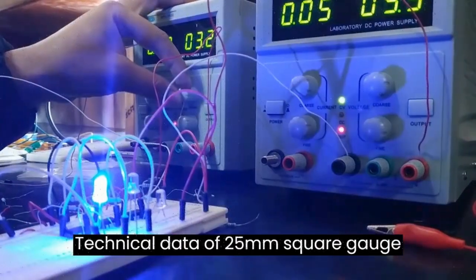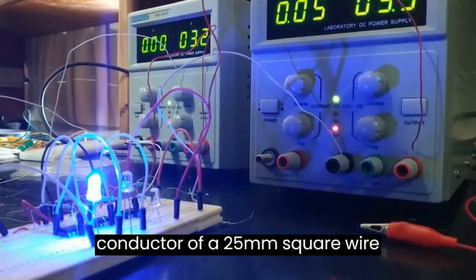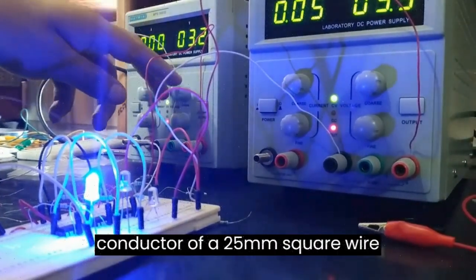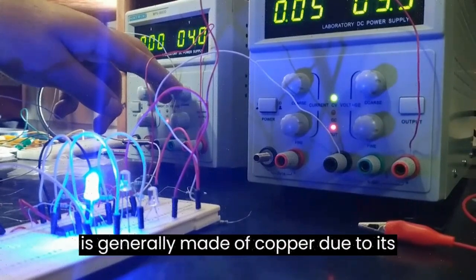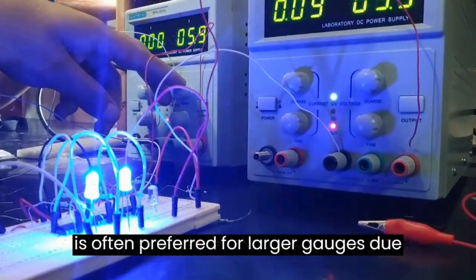Technical data of 25 millimeters square gauge wire. The inner conductor of a 25 millimeter square wire is generally made of copper due to its excellent electrical conductivity. Copper is often preferred for larger gauges due to its efficiency and lower electrical resistance.